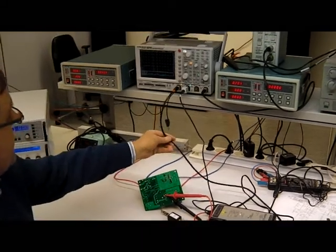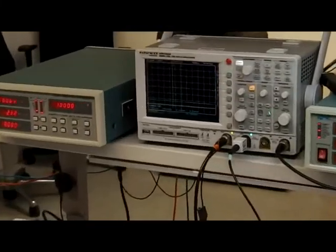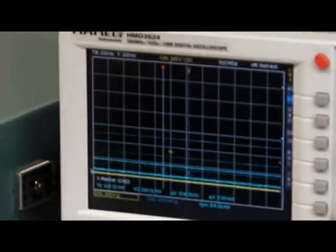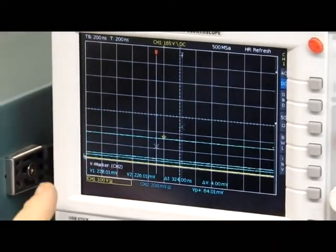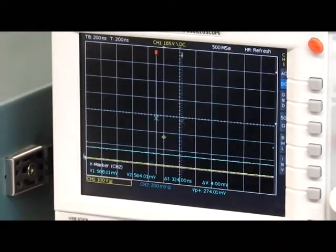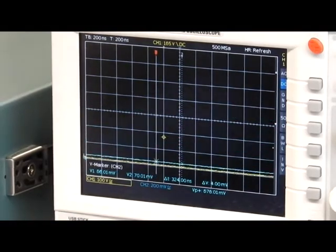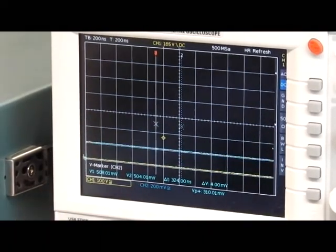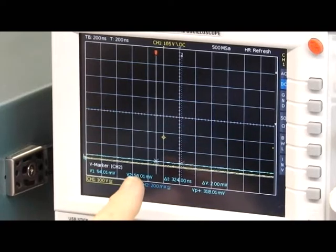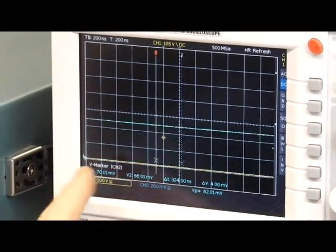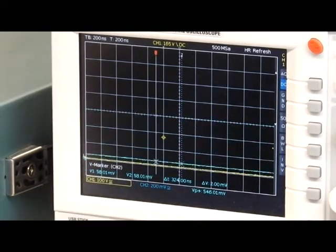On the display, on the oscilloscope, I've connected the differential probe to channel 1. Channel 1 is at a setting of 100 volts per division, the yellow channel, and channel 2, the blue channel, is at 200 millivolts per division. So we can see we have a factor of 500 to 1 between the two channels in resolution.